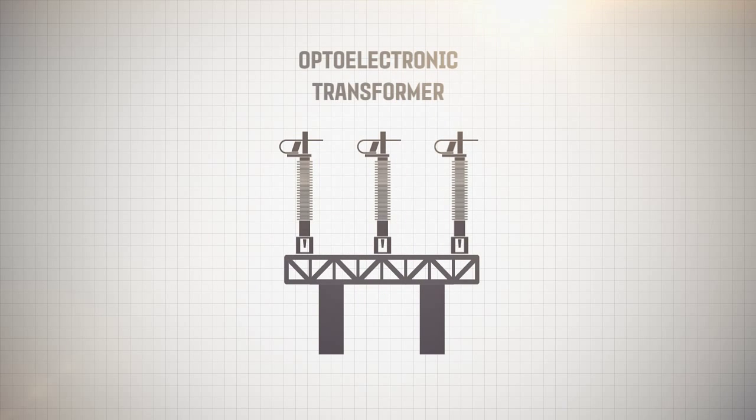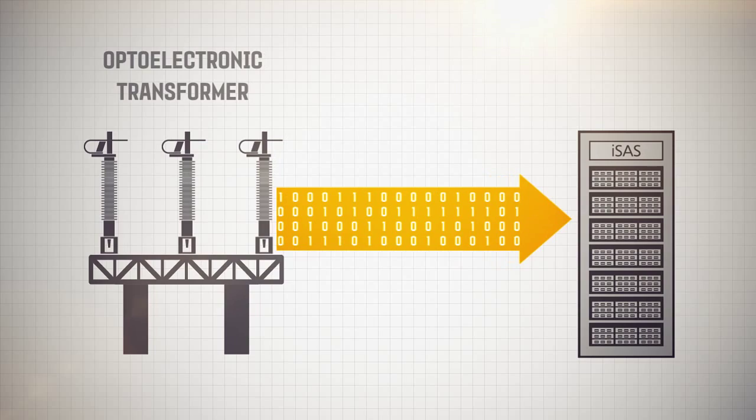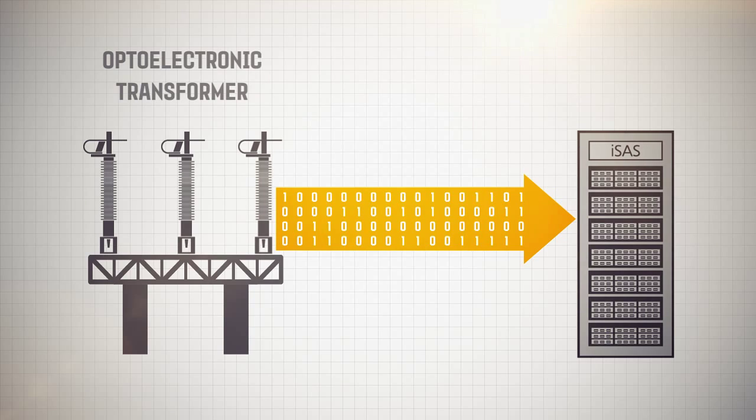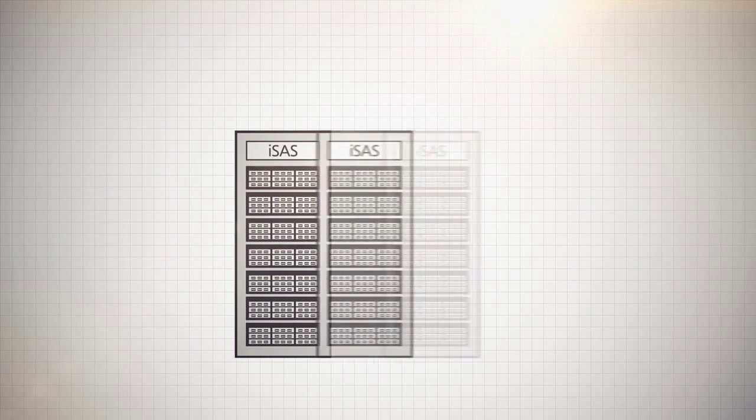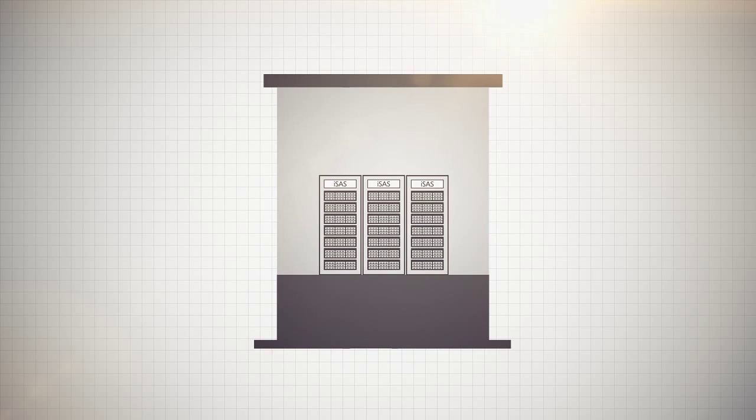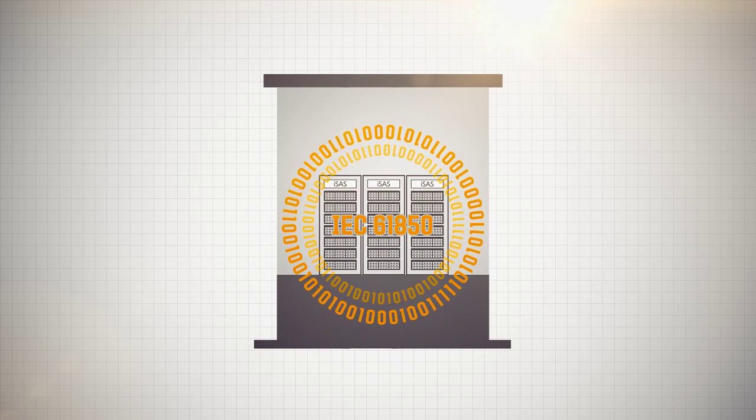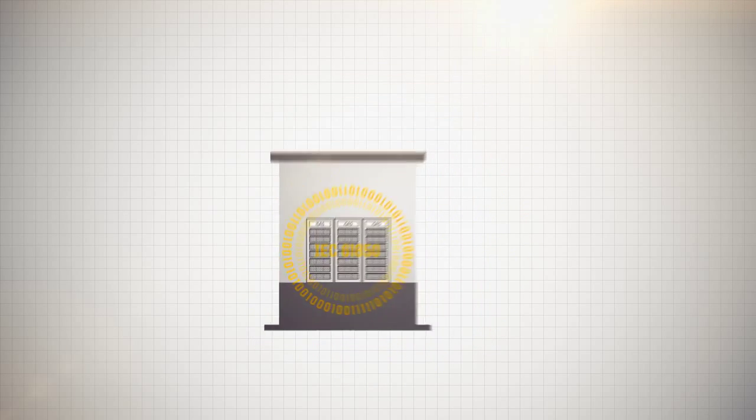Digital substation is comprised of the following equipment: Primary measuring equipment utilizing optoelectric technology for data measurement and transfer, and a unified substation security and control complex designed as a modular data processing center.